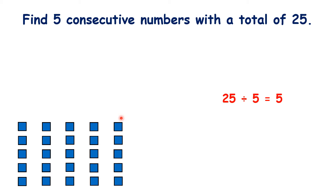So what do we need to change here so that we have consecutive numbers? Let's move a block from this group to this group. So now we have 4, 5, 6 in the mix — these actually are consecutive numbers because there's a difference of 1 as we go from one group to the next. But let's make it harder and find five different consecutive numbers.